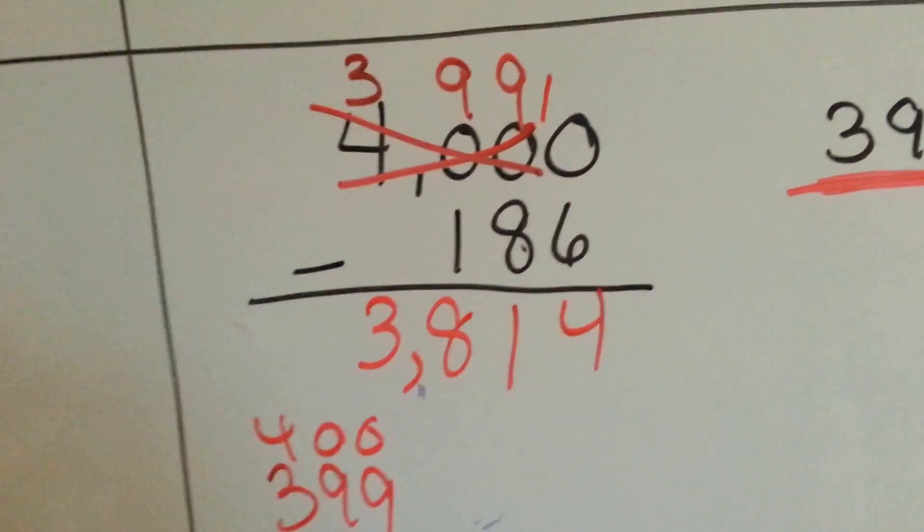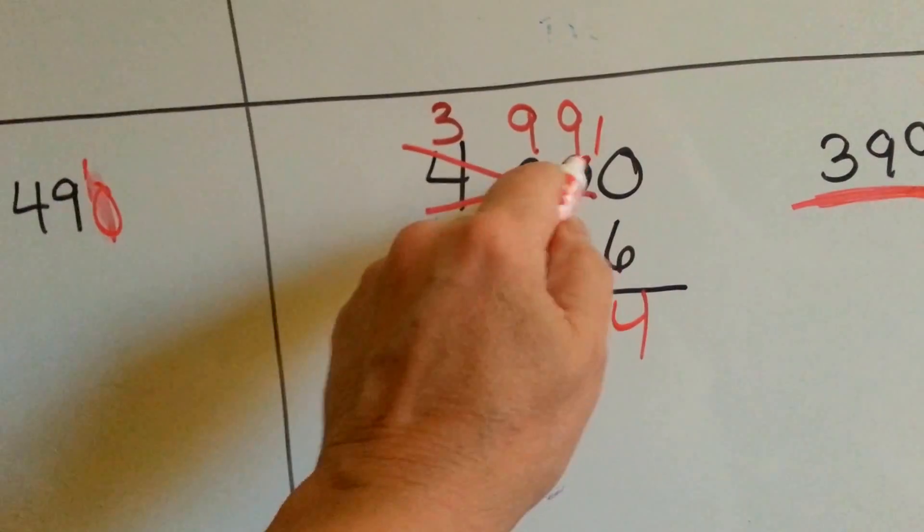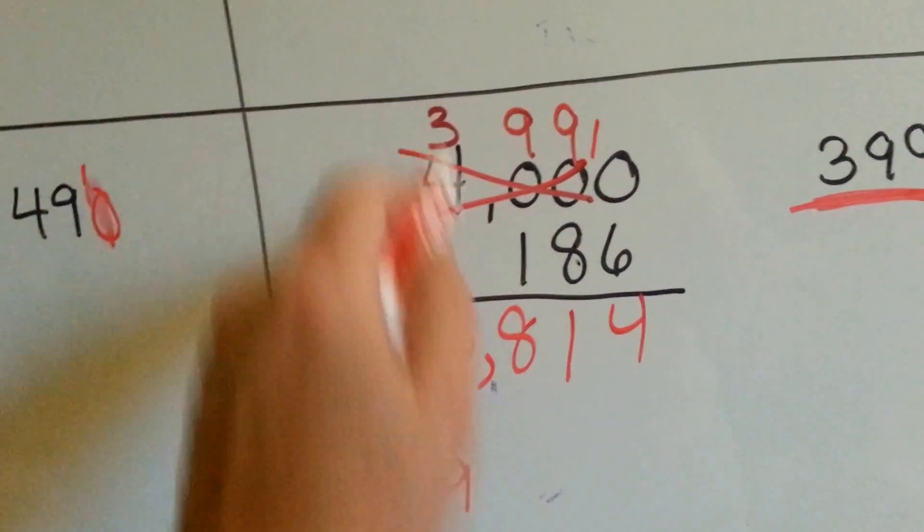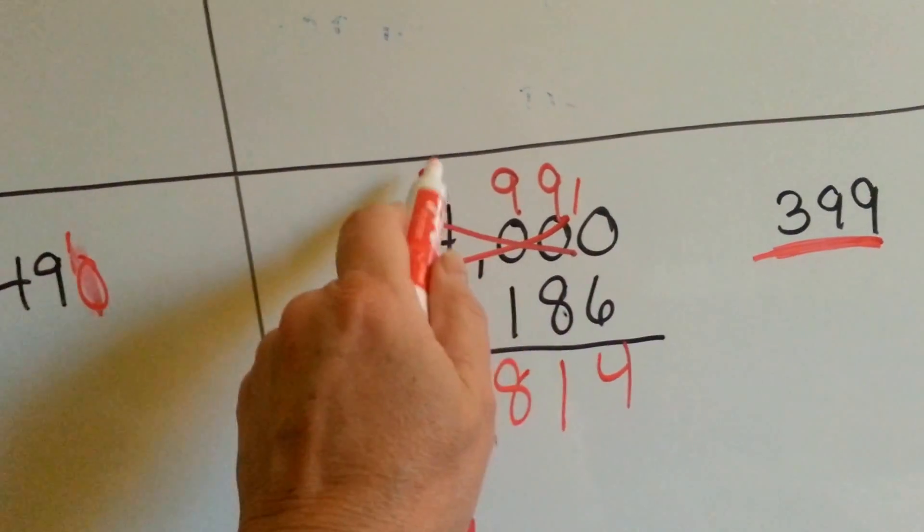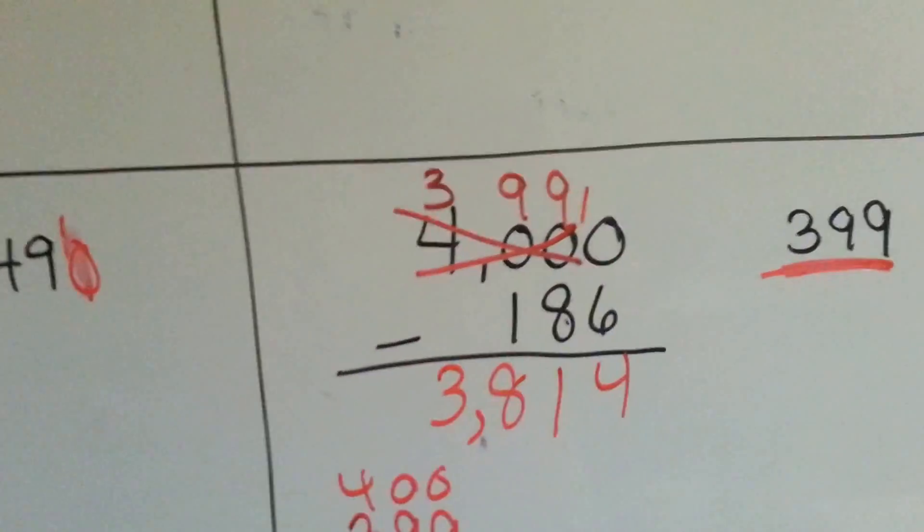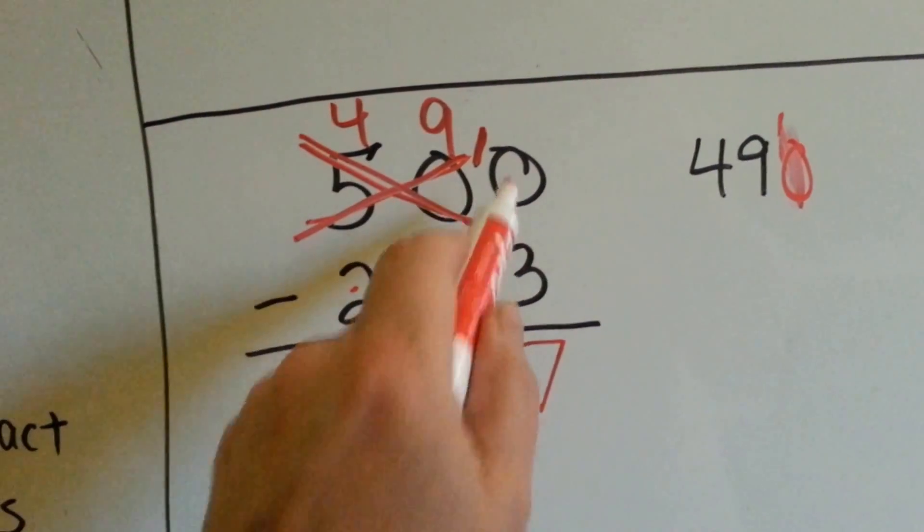That's the quickest way to borrow when you've got lots of zeros. Just cross off the whole number and turn it into the one less. This 4000 becomes 399 with a 10 at the end. This 500 became a 49 with a 10 at the end.